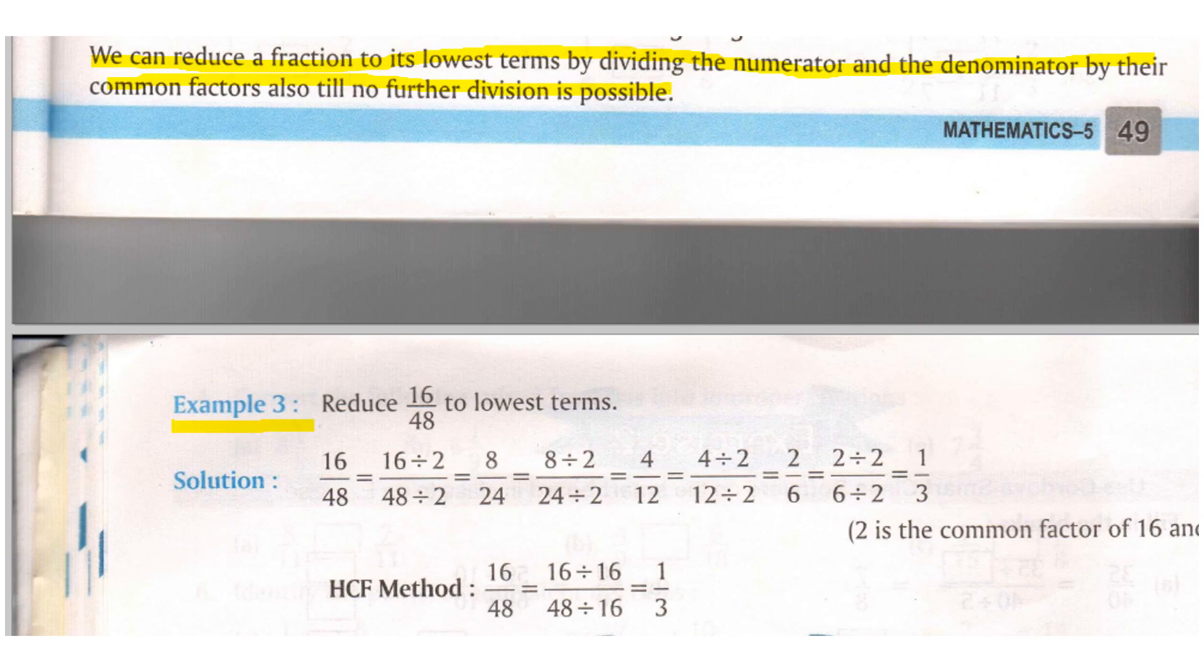Example 3 is from your book. Reduce 16 by 48 to lowest terms. Now here we are not going to find the HCF. If you see both the numbers are divisible by 2, right?